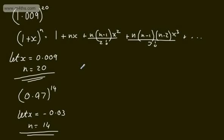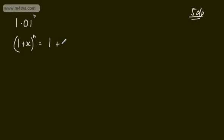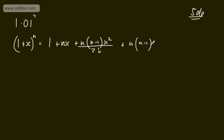Let's now work through an example. We want to find 1.01 to the 7th power as an approximation to 5 decimal places. Using (1 + x)^n, the expansion gives us 1 plus nx, plus n(n−1) x squared over 2 factorial, plus n(n−1)(n−2) x cubed over 3 factorial, and we could keep going.